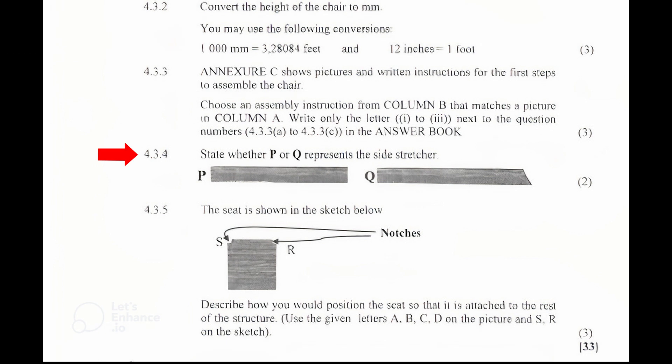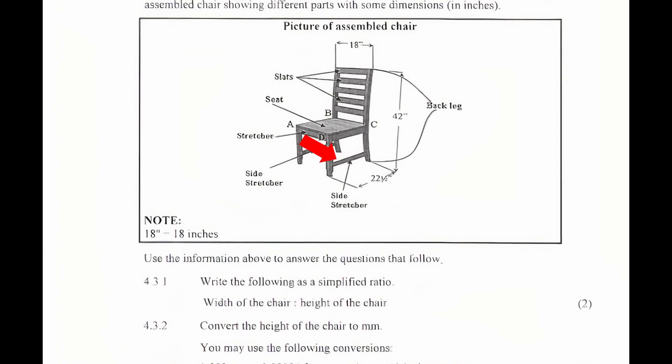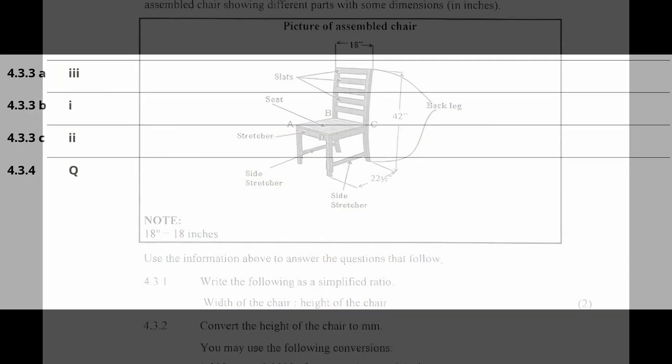4.3.4 State where the P or Q represents the side stretcher. From the picture of the assembled chair, we see that the side stretcher is thinner than the stretcher. So, Q represents the side stretcher.